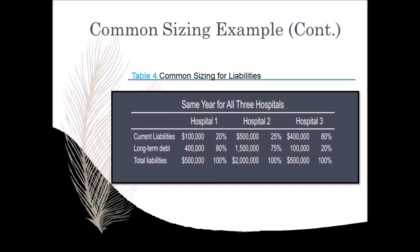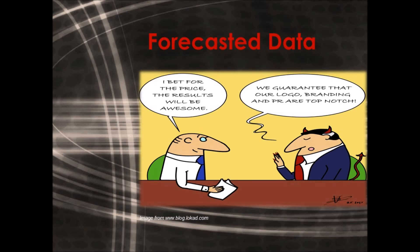In each case, the total liabilities equals 100%. Then the current liabilities are divided by total liabilities to find the proportionate percentage attributable to that line item. For example, in Hospital 1, the current liabilities is $100,000 and the total liabilities is $500,000, so $100,000 divided by $500,000 equals 20%. The long-term debt is $400,000 divided by $500,000 equals 80%. 20% plus 80% equals 100%.